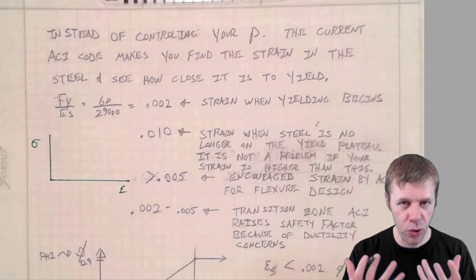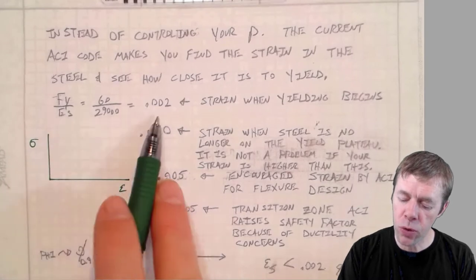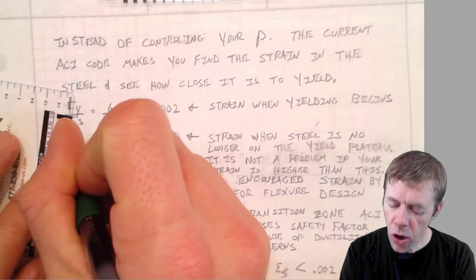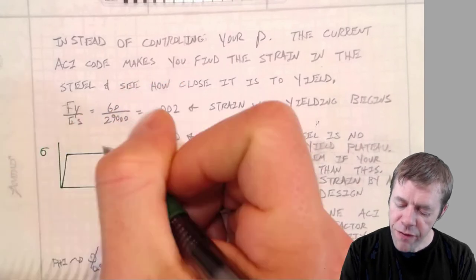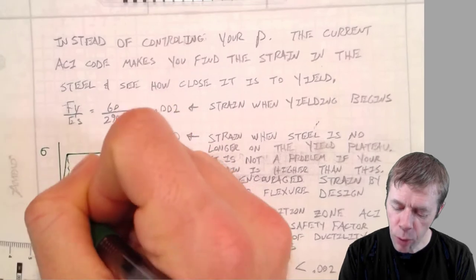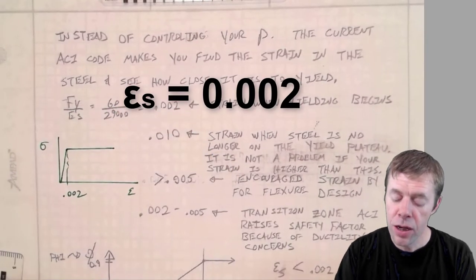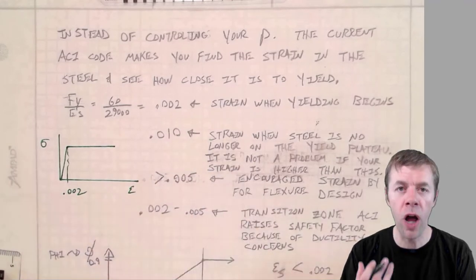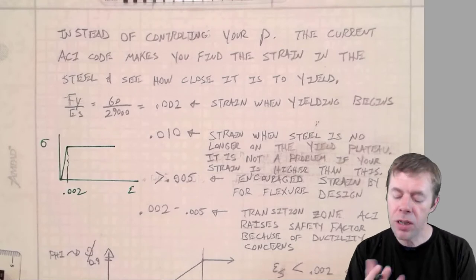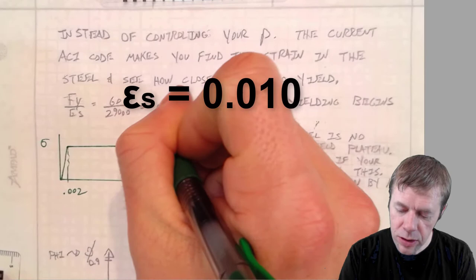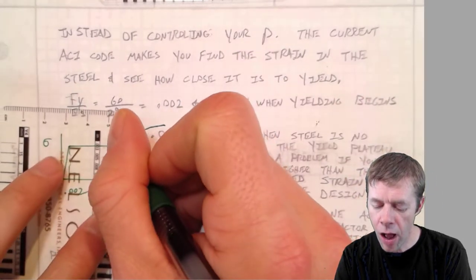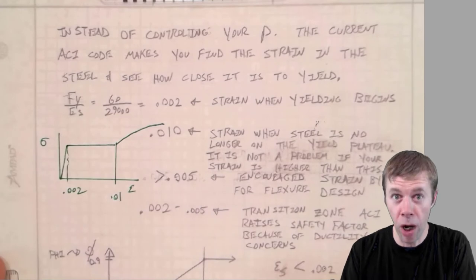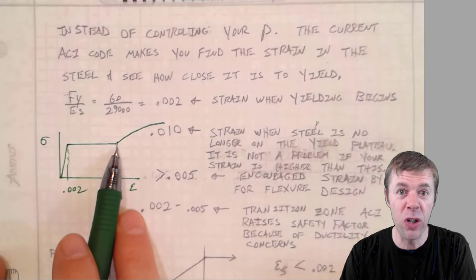Let's talk about some major points on the stress strain diagram. The point where the steel just begins to yield, that's when it goes from linear to starting to yield. That value, when that very first happens, is at a strain of 0.002. If you forgot that, you can always take 60 divided by 29,000 KSI and you will get 0.002. Now the point when the strain is no longer on the yield plateau, people could argue where this is at, but a good estimate is about 0.01. So it's going to keep strain hardening over here. And this point is around 0.01 strain. And this is a good thing.